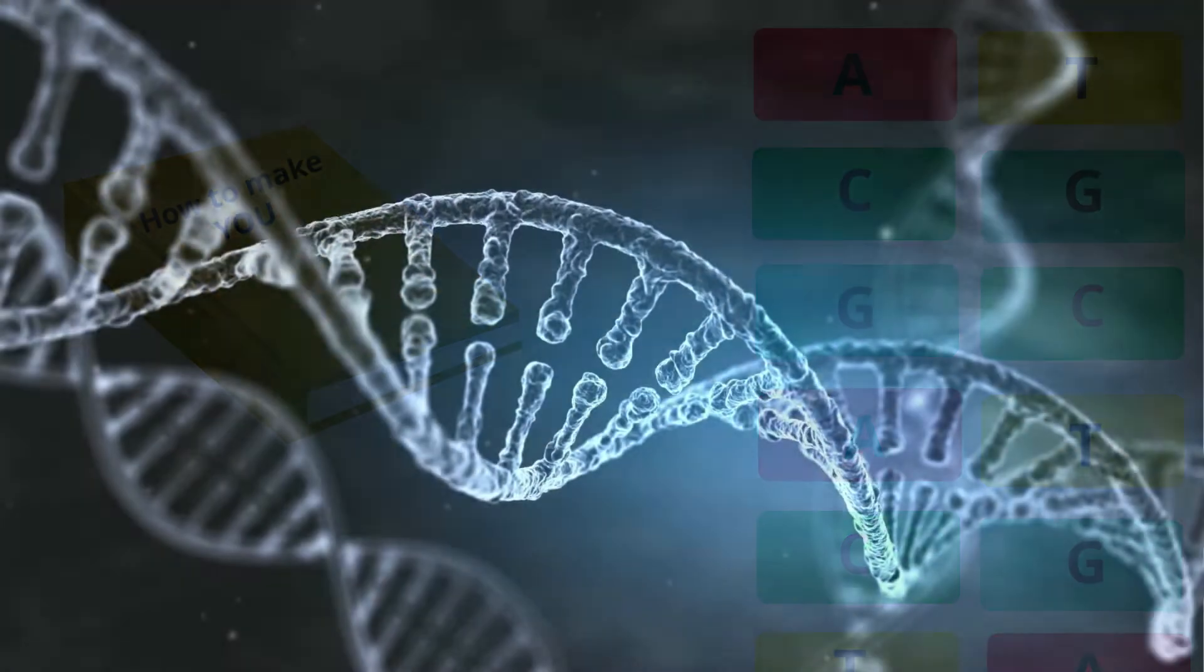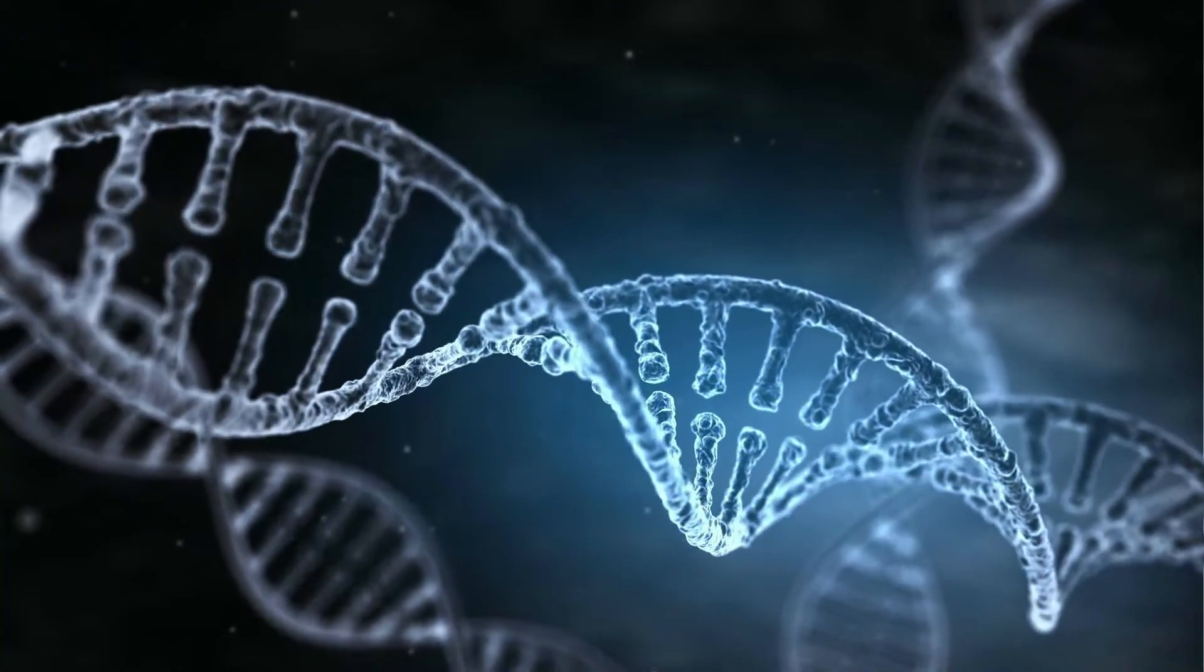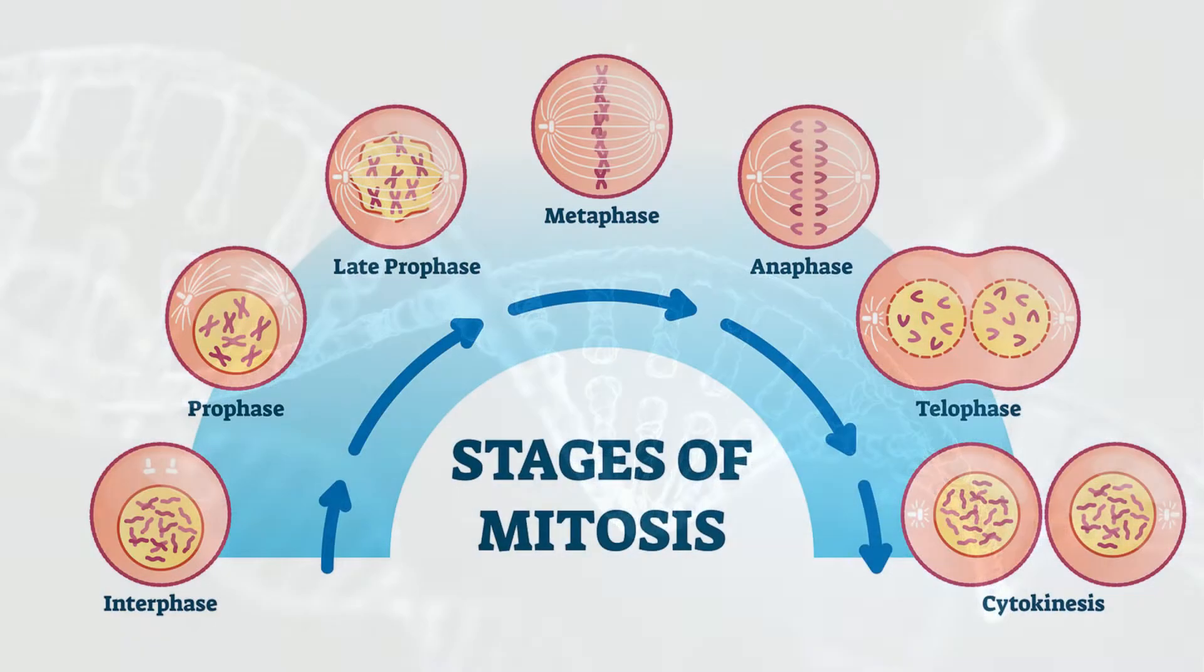This strand of DNA is very long. In fact, if you were to stretch it out, it would be 5 feet in length, roughly. During the prophase portion of mitosis, this strand of DNA begins to condense and become visible.